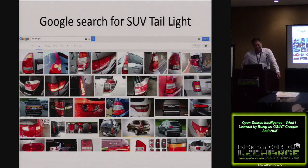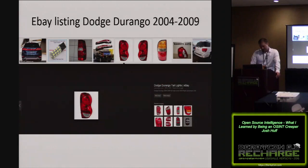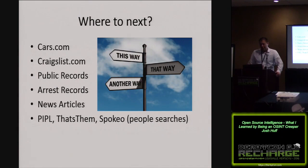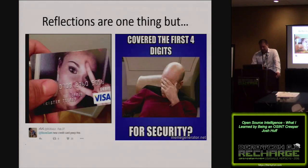Quick Google search for an SUV taillight — I was looking for a distinctive half-moon shape in the reflection. A few are kind of close, but no cigar. Refine it a little, throw in 'used SUV taillight.' I think it's the fifth one on the top — it was a dead hit when we looked at it closer. Clicked on it: an eBay listing for a Dodge Durango, 2004 to 2009. From there we can jump to cars.com, Craigslist, public records, arrest records, news stories — try to drill into who's driving vehicles like this. Then you go into people searches. That's unintentionally produced OSINT, but a good exercise to get your mind thinking in a certain way.